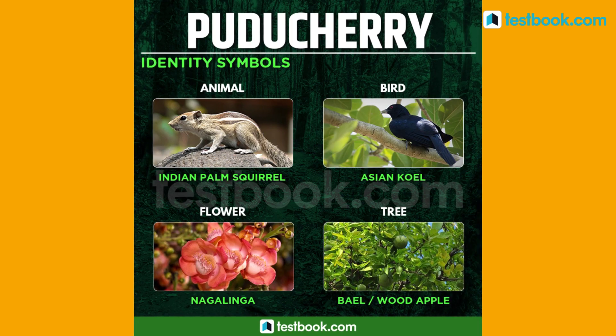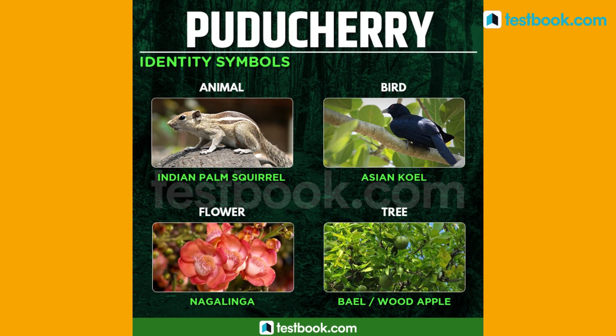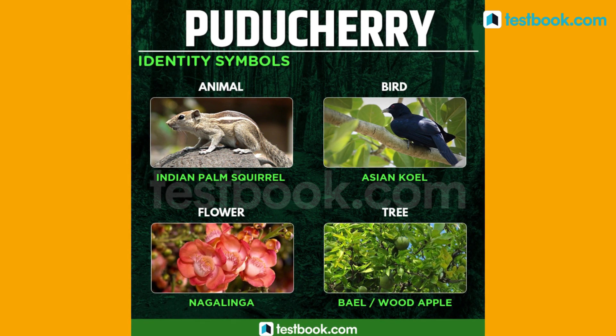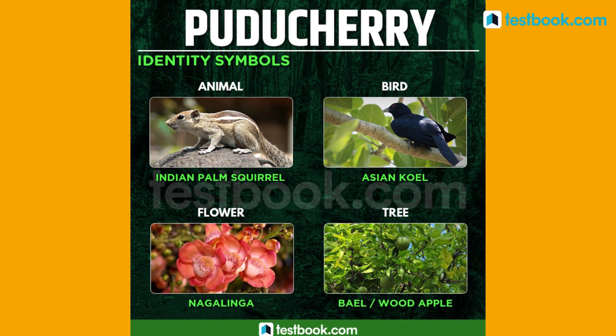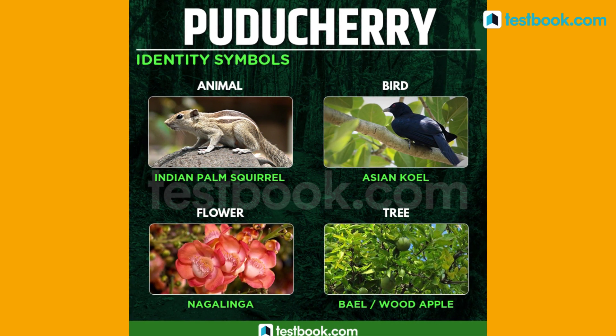Indian Palm Squirrel is the state animal for Puducherry, state bird is Asian Koel, state flower is Naga Linga and state tree is Bael or Wood Apple.